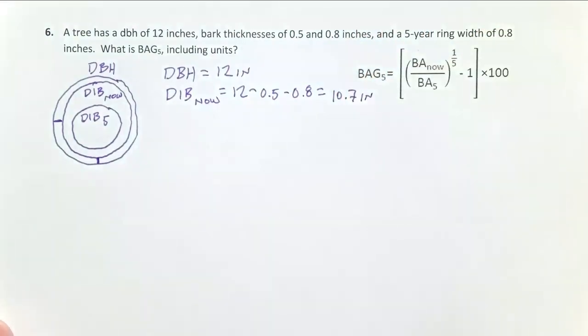So that's diameter now inside the bark. We basically have a bark thickness on both sides that amounts to 1.3 inches total.